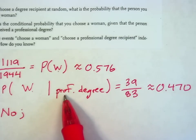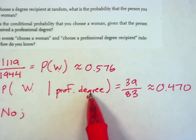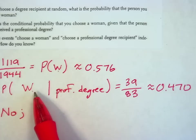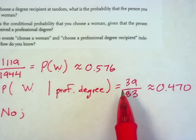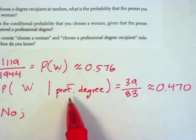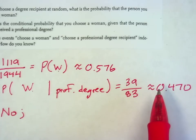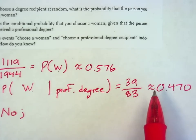It shouldn't matter whether I'm isolating myself to simply professional degrees, the likelihood of having randomly chosen a woman here should be exactly the same. And it is not. In fact, the condition of having looked at only professional degrees actually decreases the probability of selecting a woman by about 10%.